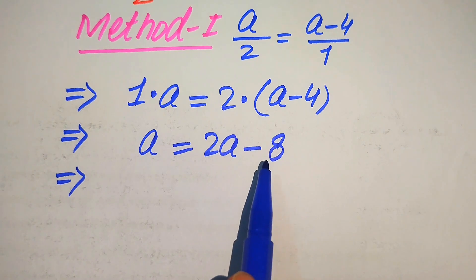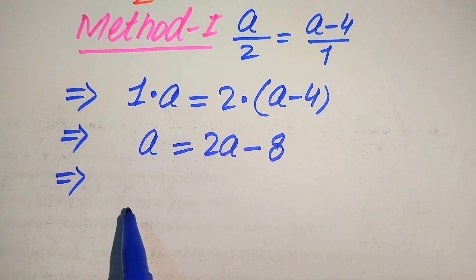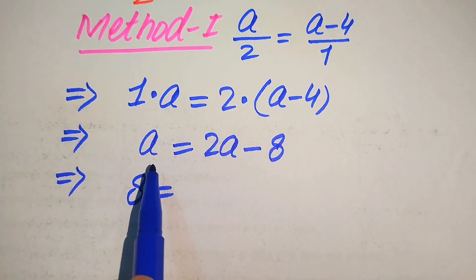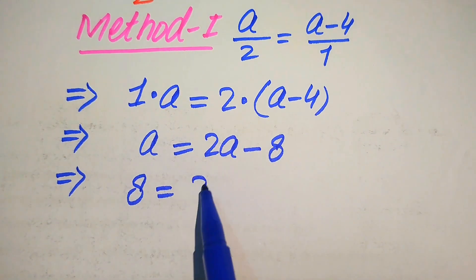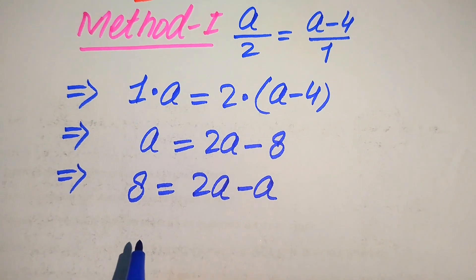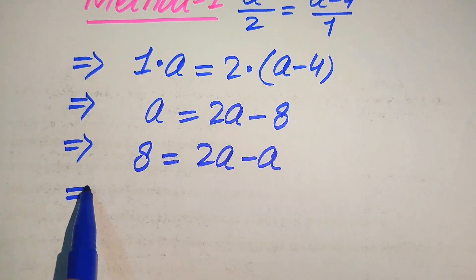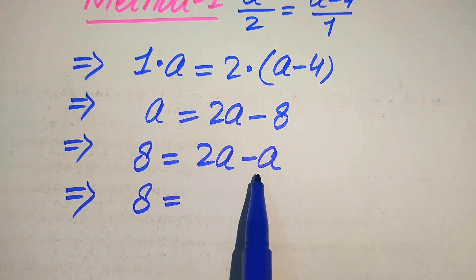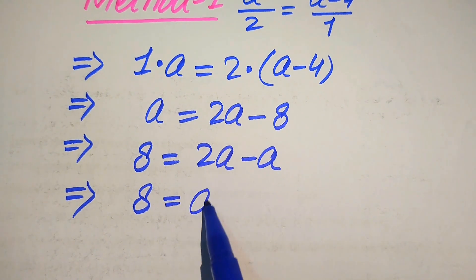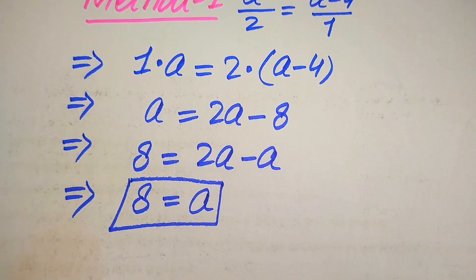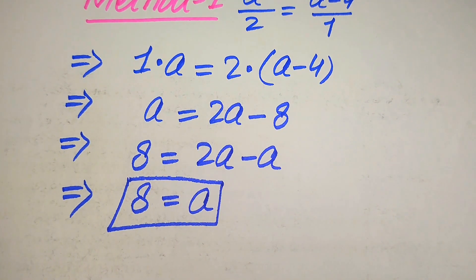We move this a to the right-hand side and move minus 8 to the left-hand side. When we move minus 8, it becomes plus 8, and when we move a it becomes minus a. So we have 8 equals 2a minus a, which gives us a equals 8. This is the only root of the given equation.